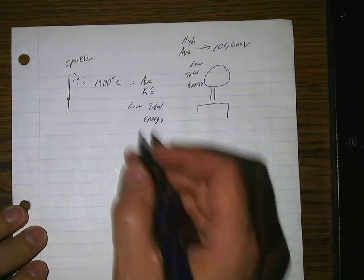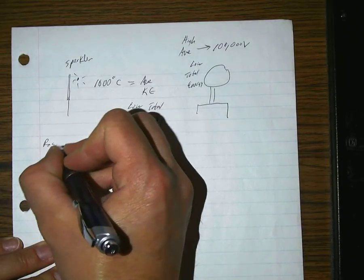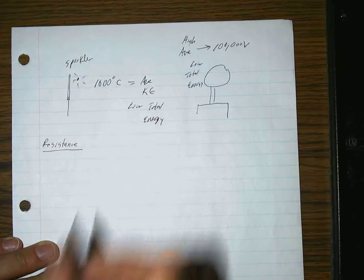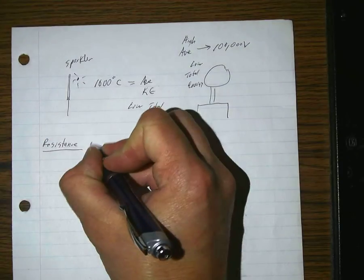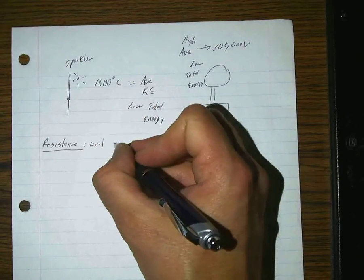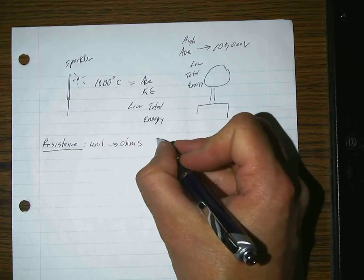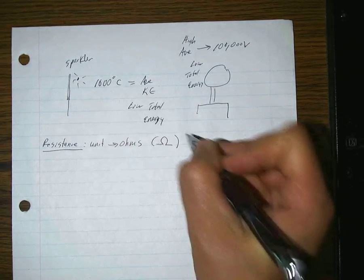Once we understood voltage, we then started talking about resistance. Resistance is the idea that there will be an opposition to charge movement — not everything wants charges to go marching through it. We said we could measure resistance in ohms, and the unit for an ohm is the Greek symbol omega, which looks kind of like a horseshoe.